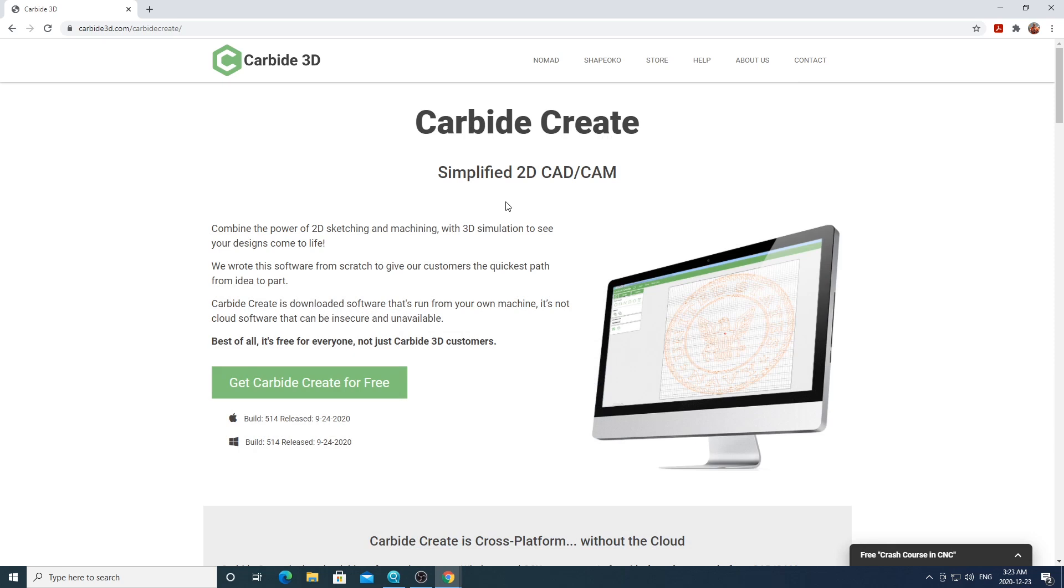In order to open up the files for this video you'll need to install Carbide Create. Carbide Create is a free CNC design software provided by Carbide 3D. Just go to the URL in the description below and download and install it. It's a fairly simple program so those of you who haven't used it before should not have much of a learning curve figuring out how it works.